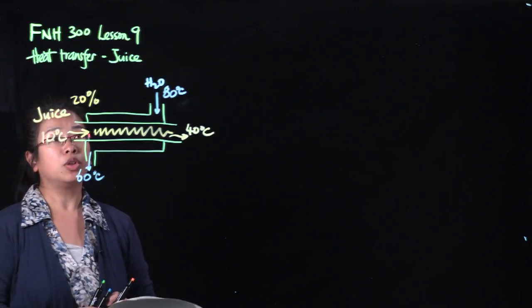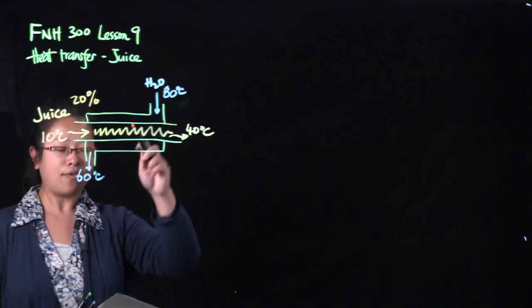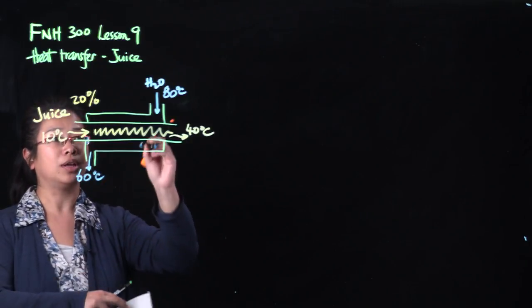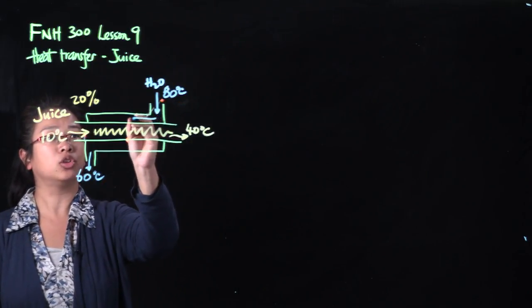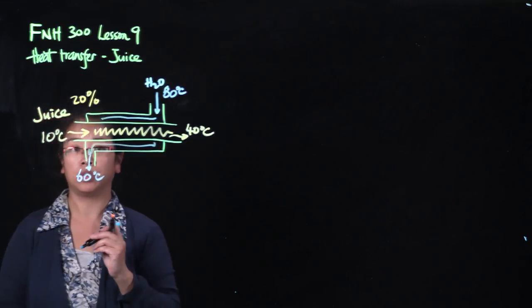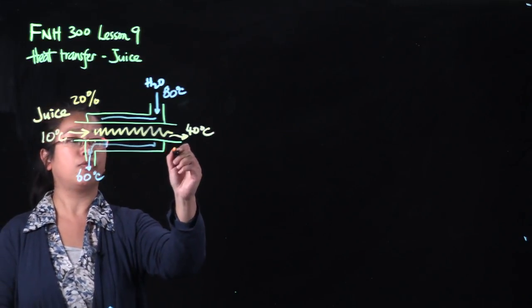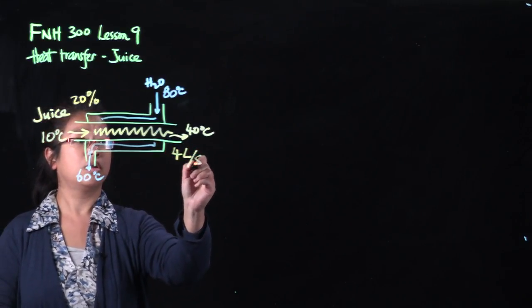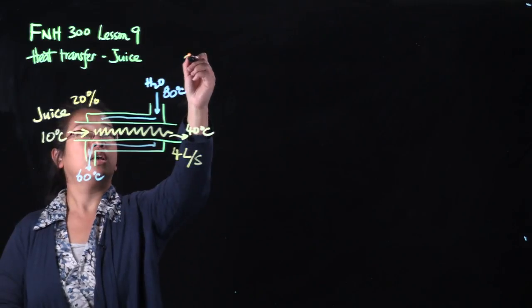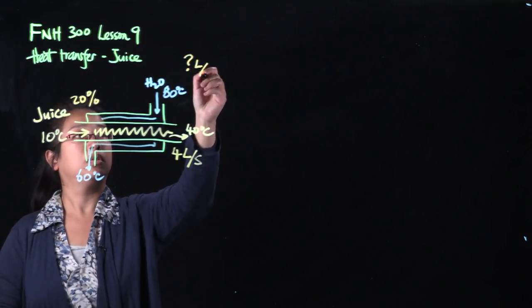The water that we are going to use will have a temperature of 80 degrees Celsius after it goes through the cooling and the heating. So some of the energy is going to be lost. And at the end, it will have a temperature of 60 degrees Celsius. If our juice is pumping through the pipe at 4L per second, the question is how much water do we need per second.